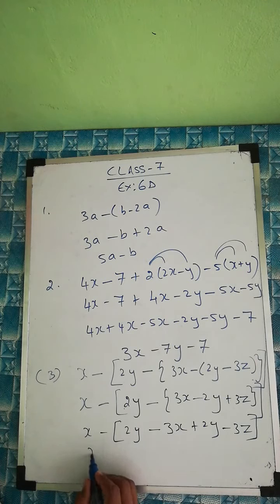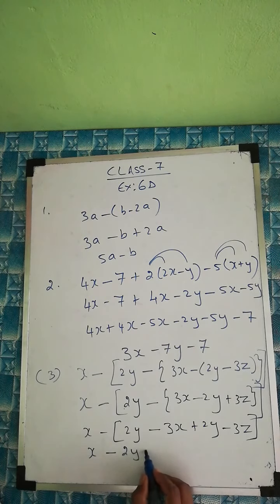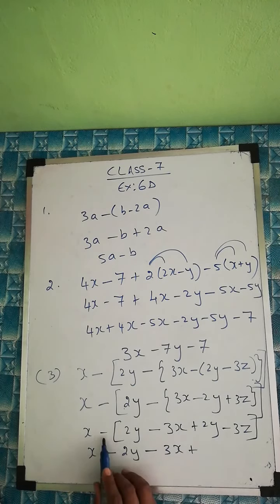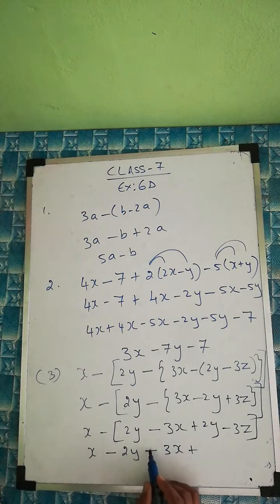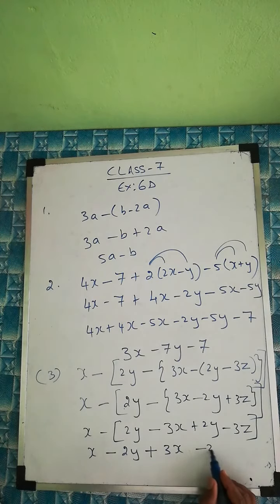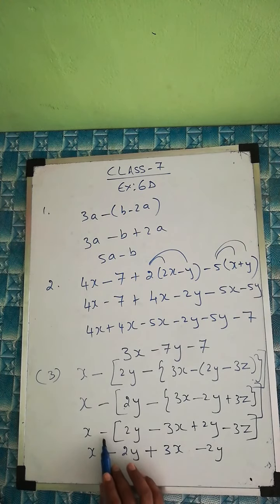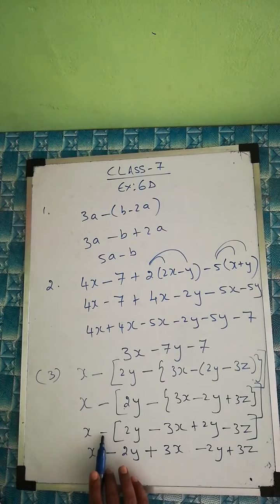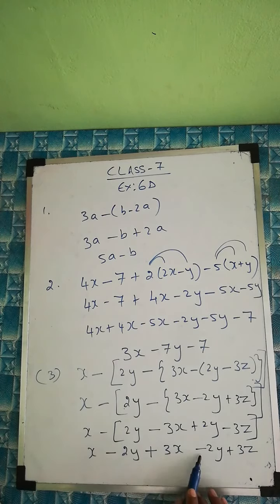So we get x, minus 2y, minus minus is plus 3x, minus plus is minus 2y, and minus minus is plus 3z. Remember: we are multiplying the minus inside — minus times minus is plus, minus times plus is minus.